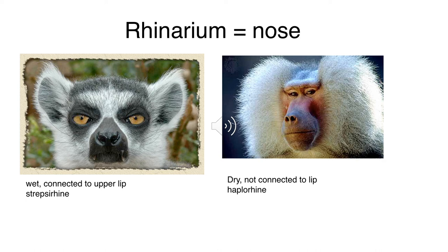Rhinie is short for rhinarium, and rhinarium means nose. If you think of a rhinoceros, they have a very distinct horn on their nose - rhinies are noses. All those words ending in rhinies on the last slide mean we're going to be able to visually look at a primate's nose to tell some important things about it. Let's take a look at these two primates: a lemur on the left and a baboon on the right.